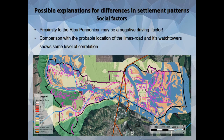We can also look at social factors. In this case, what comes up is the proximity to the border — the Ripa Pannonica — the border of the Roman Empire, which runs along the Danube in the area. If we put the probable route of the Limes road on our map along with the watchtowers along the border, we can see some level of correlation between the habitation in the eastern part, and that there is no habitation east of this Limes road area, which is quite an interesting conclusion and something we should look further into.